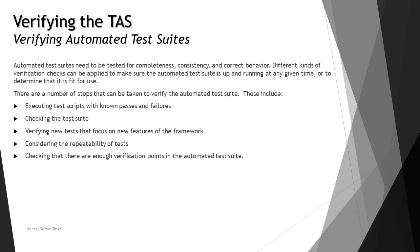When you talk about test suites, there are several considerations just like the other components of the automation environment. We do have to consider a lot of tests or checks prior to execution. Generally when you are trying to automate the test suites, a verification has to be done well before execution takes place. Sometimes we may expect completeness, consistency, or correct behavior issues related to the test suites. Different kinds of verification checks can be applied to make sure the automated test suite is up and running at the given time when it is supposed to run.